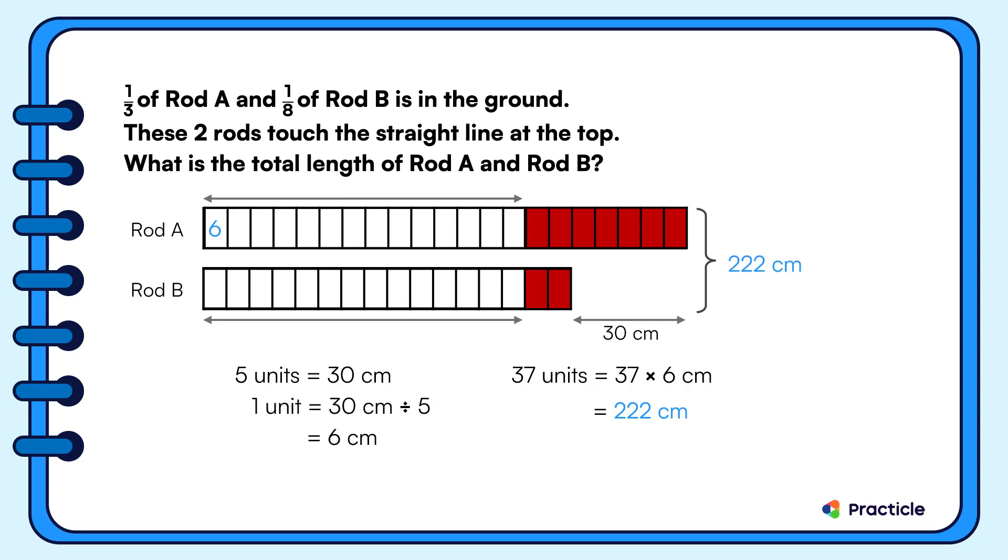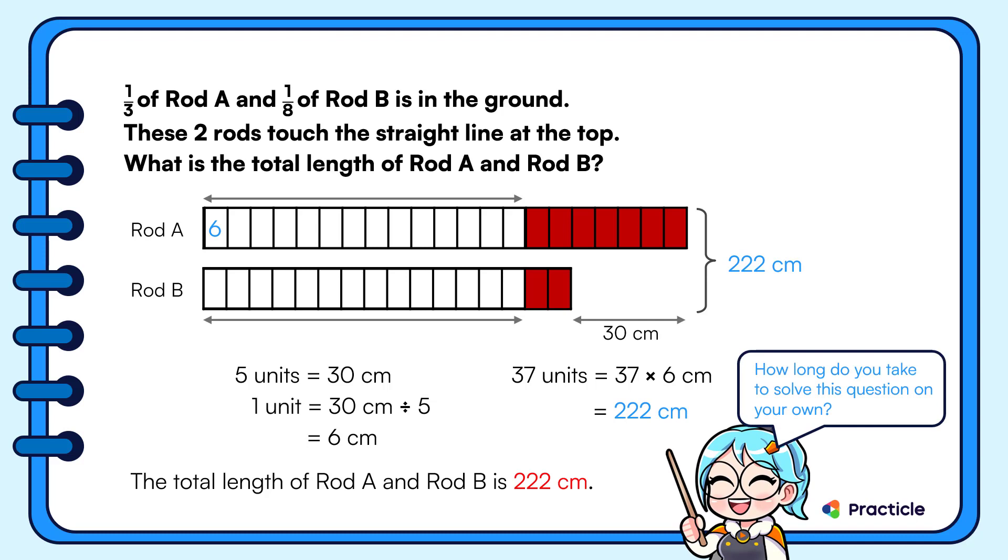And my dear boys and girls, we have found that the total length of rod A and rod B is 222 centimeters. Now try solving this PSLE math question on your own and let us know how long it took.